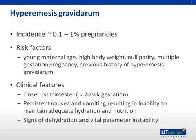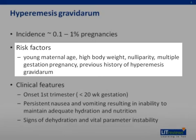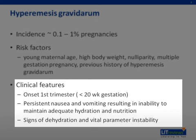Hyperemesis gravidarum has an incidence of somewhere between 0.1 to 1% of all pregnancies. Risk factors include young maternal age, high body weight, nulliparity, multiple gestational pregnancy, and previous history of hyperemesis gravidarum. Clinical features include onset of symptoms usually in the first trimester of pregnancy, with severe and persistent nausea and vomiting, which may result in the patient being unable to maintain adequate hydration and nutrition.